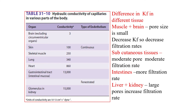Regarding differences in conductivity between tissues: muscle and brain capillaries have very small pore sizes, so the rate of filtration is very little. Subcutaneous tissues have moderate pore size providing moderate filtration rates. Intestinal filtration rates are higher, while liver and kidney have large pores with the highest filtration rates. If a specific surface area of glomerular capillary allows 15,000 substances to pass per second, the same surface area of brain capillary allows only three substances to pass per second.